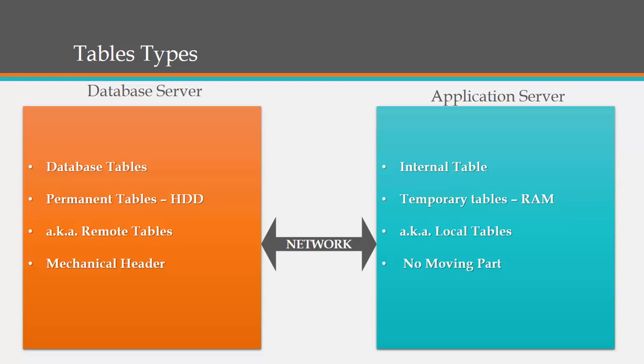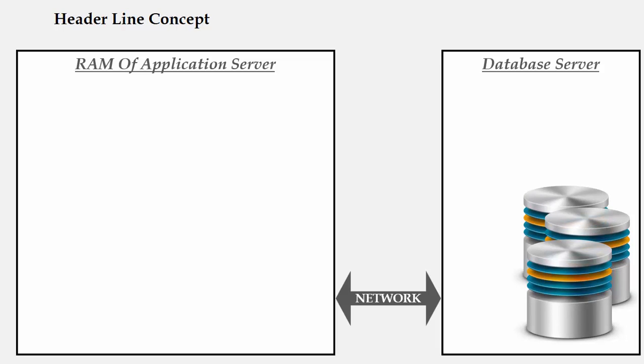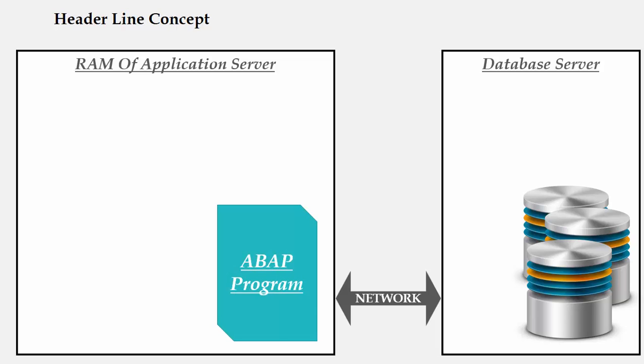Let's get into the details of how execution takes place in the back end. Consider the left side to be the RAM of an application server and the right-hand side to be the database server. The thing linking these two is a network, which moves data from one server to another. On the database server side are the hard disks where all the different types of tables are stored.